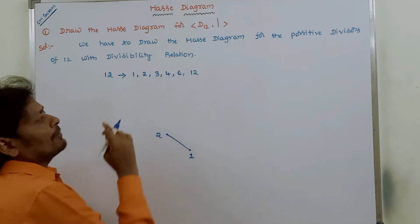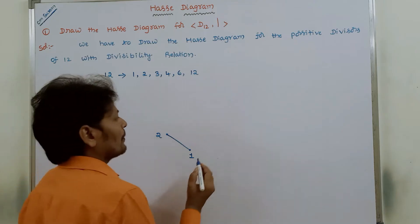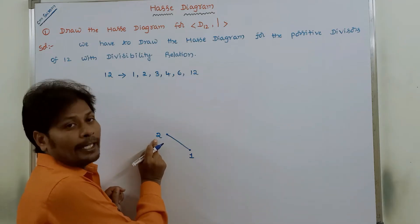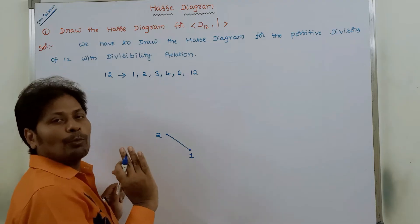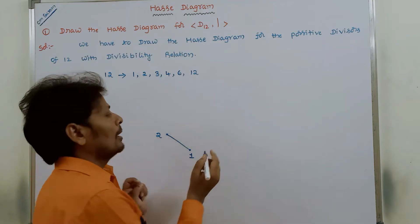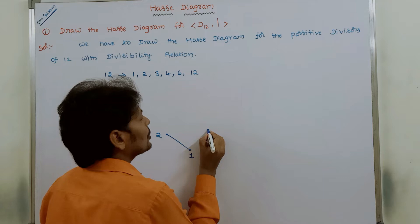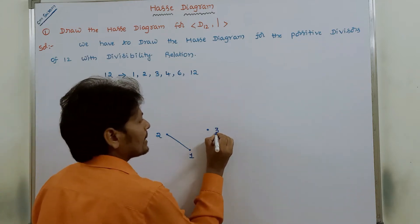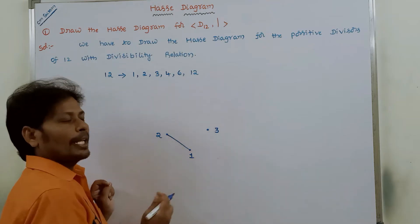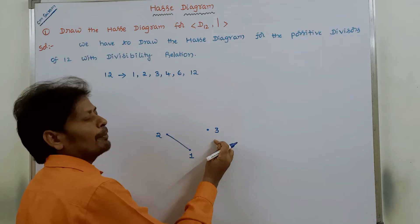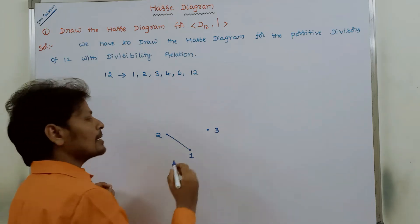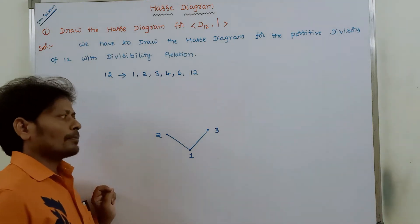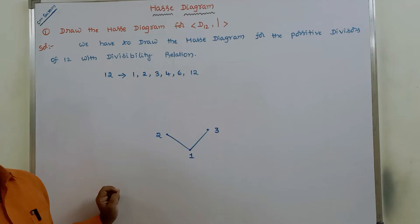The next positive divisor is 3. Here, 2 does not divide 3, so we do not draw an edge between 2 and 3. However, 1 divides 3, so there is a divisibility relationship between 1 and 3. Hence, we have to draw the edge between 1 and 3.